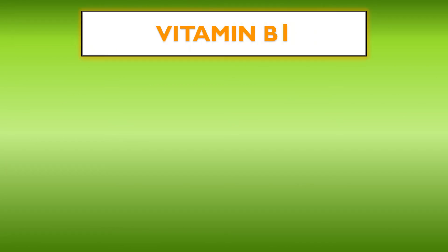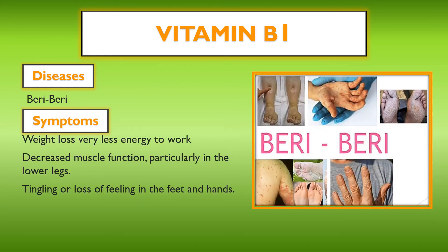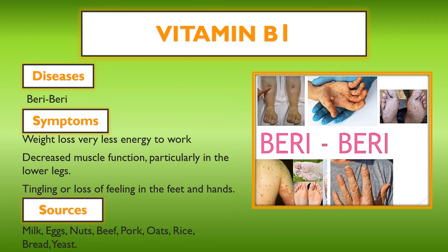Next is vitamin B deficiency. The name of the disease is beriberi. Symptoms include weight loss, loss of energy, decreased muscle function particularly in the lower legs, and the person is not able to feel sensation specially in the hands and feet. Sources of vitamin B are milk, eggs, nuts, beef, pork, oats, rice, and bread. Consuming these food items can help the person recover from beriberi.